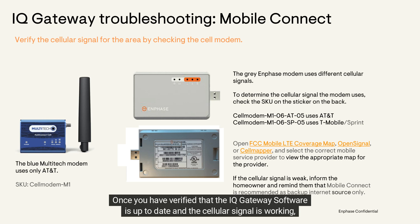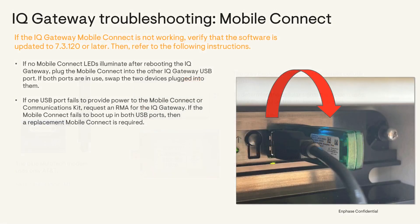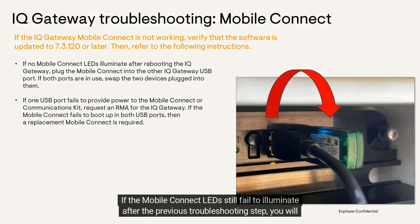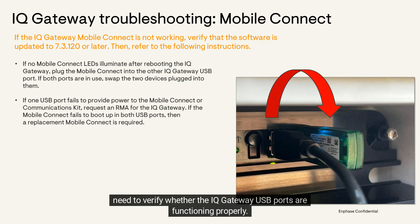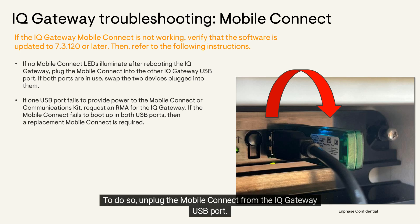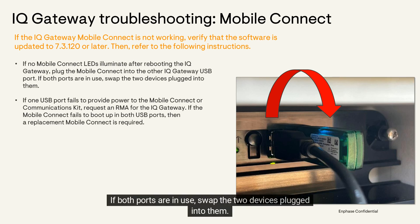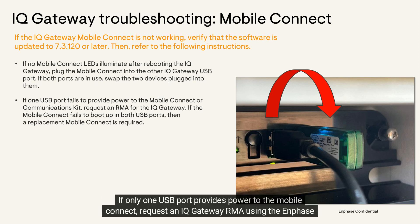Once you have verified that the IQ Gateway software is up to date and the cellular signal is working, you can troubleshoot the mobile connect. If the mobile connect LED still fails to illuminate after the previous troubleshooting steps, you will need to verify whether the IQ Gateway USB ports are functioning properly. To do so, unplug the mobile connect from the IQ Gateway USB port, then plug it into the other port. If both ports are in use, swap the two devices plugged into them, then verify whether the mobile connect LEDs illuminate green.